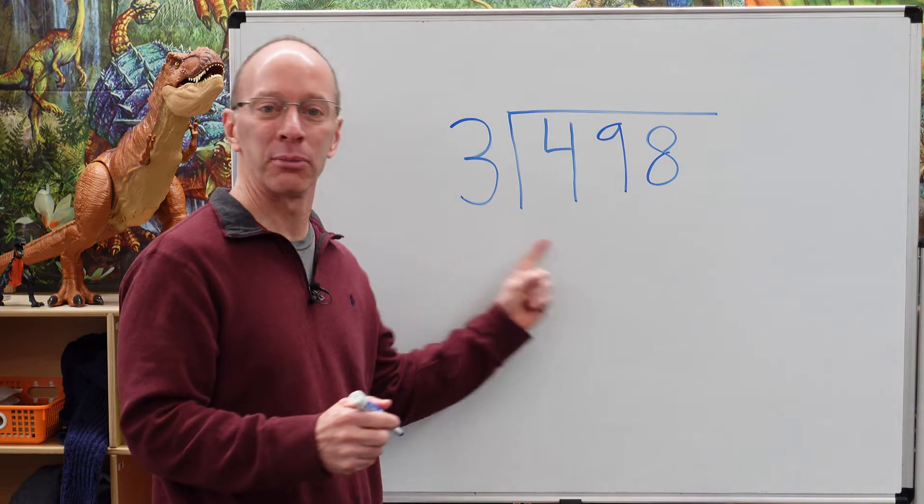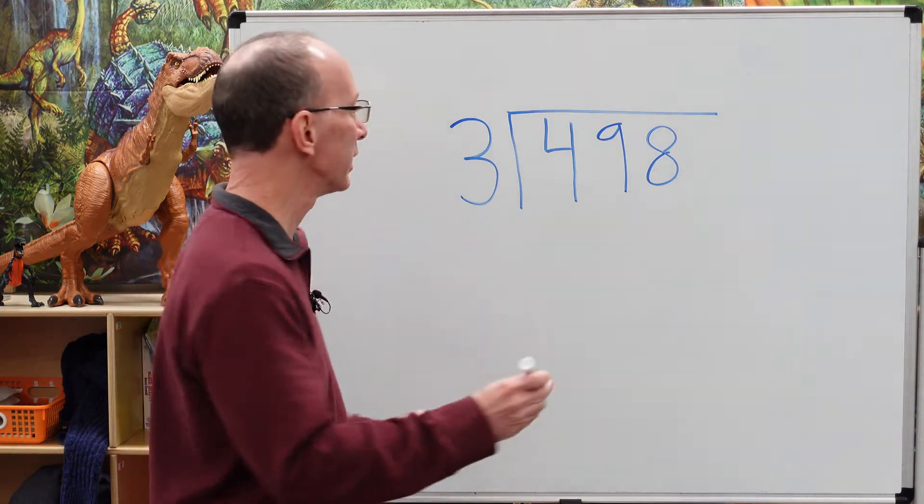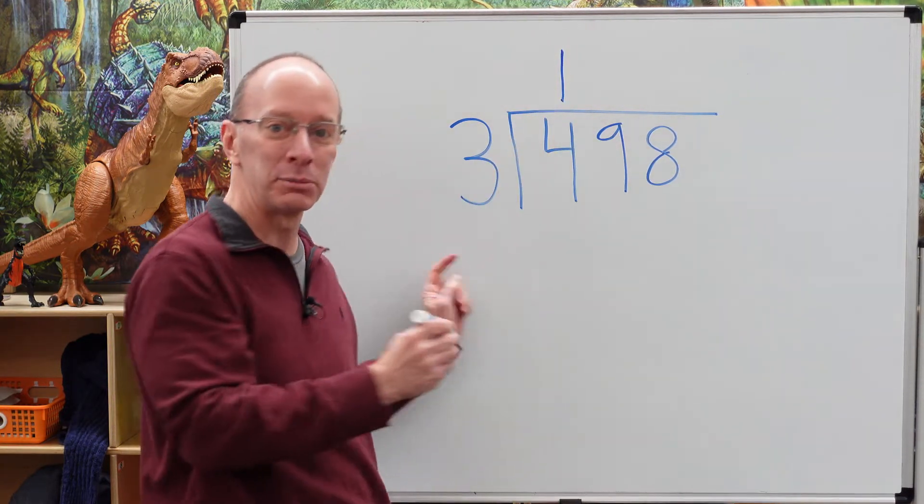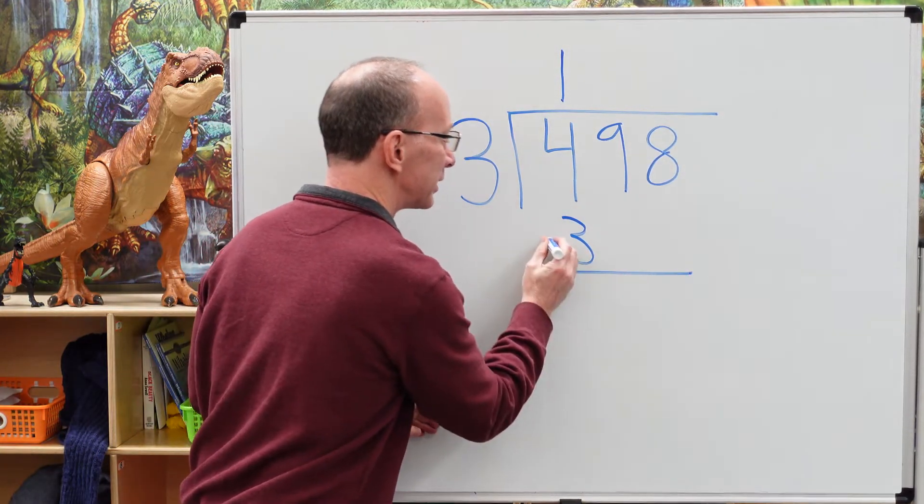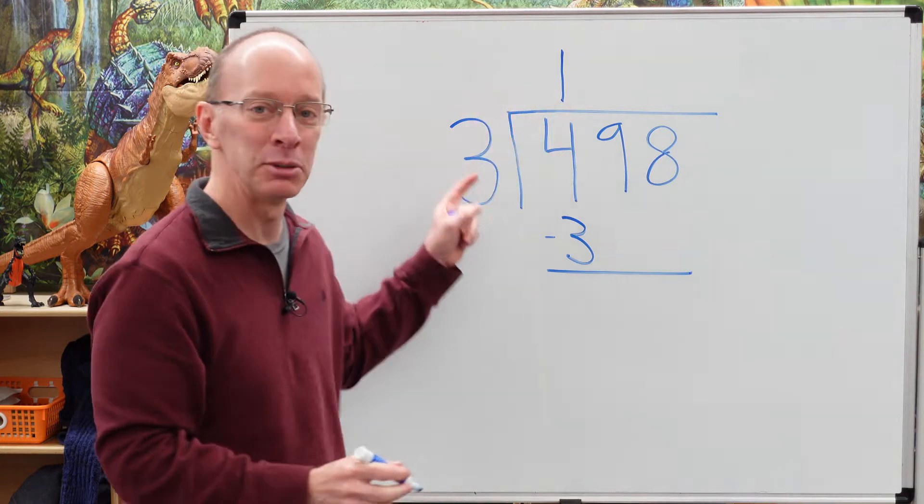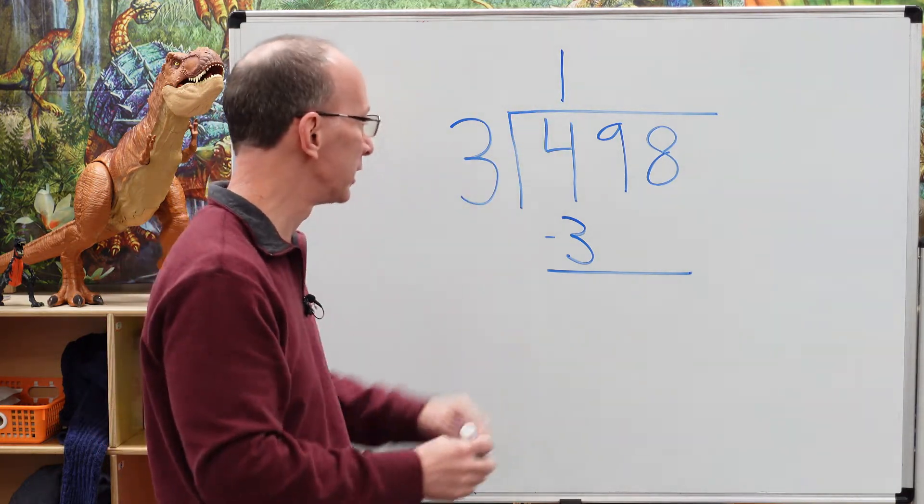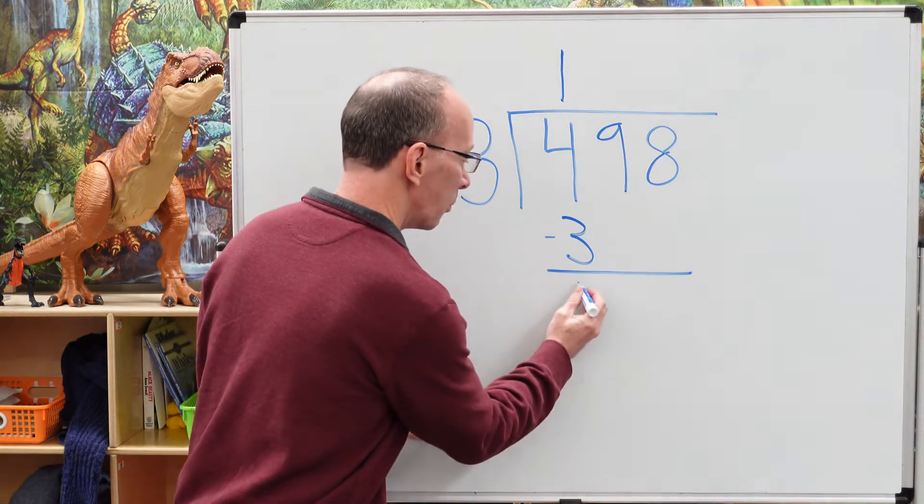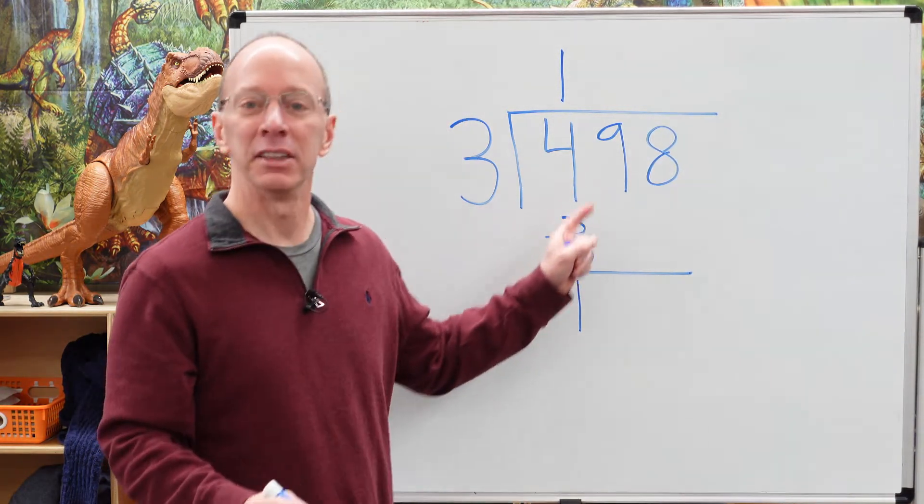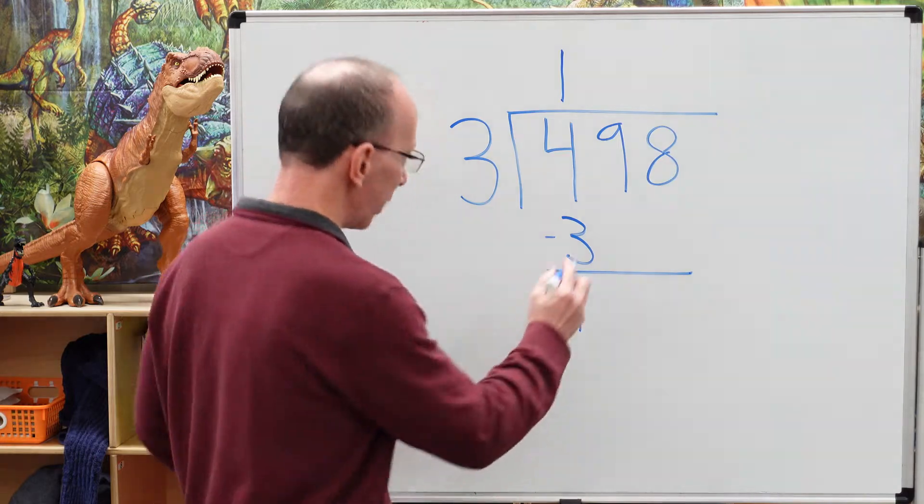How many times can I put three into four? One time. So I put a one right up here. One times three, put the three right here. All right, subtract it. So our first step is to multiply. Second, we go ahead and do our subtraction. Four minus three is one. Drop the next number down.